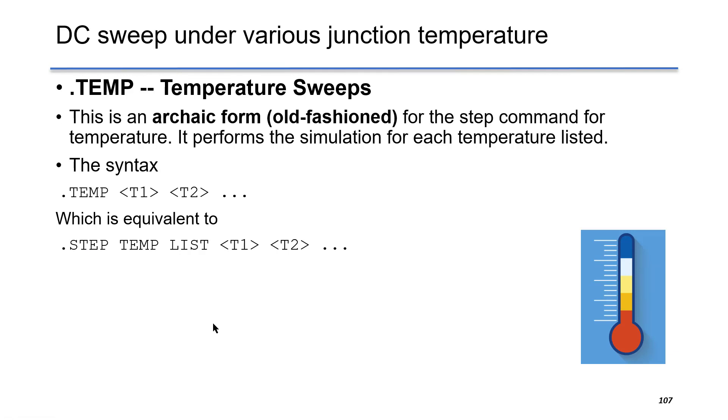You can also do DC sweep under different temperatures. So in other words, you can change the junction temperature of semiconductor devices by using .temp. So there are two equivalent syntaxes. The first syntax is .temp, temperature T1, temperature T2, etc.